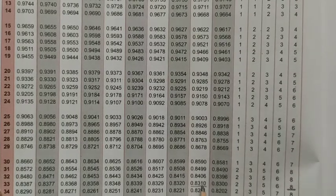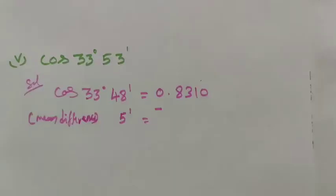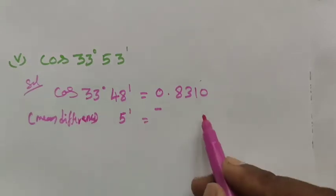So 0.8310 and the mean difference 8. So the value is 0.8310. The mean difference 5 is 8.